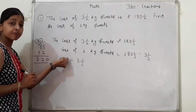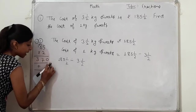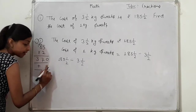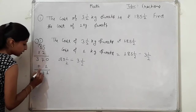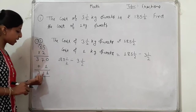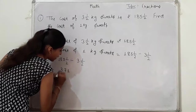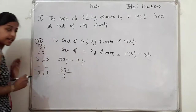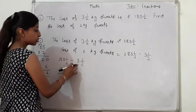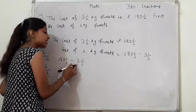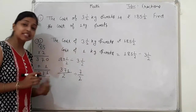जब 2 को 185 से multiply कर रहे हैं तो 370 आता है। साथ में ऊपर 1 है, तो plus 1 करो — 370 plus 1 = 371। तो यहाँ पर 371 by 2 आएगा। Next: 2, 3's are 6, 6 plus 1 = 7। तो 7 by 2 — अब यह और simple sum बन गया।